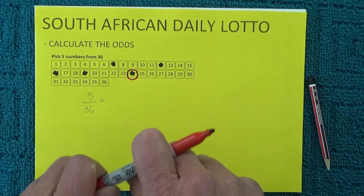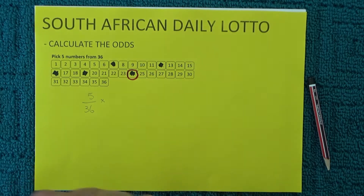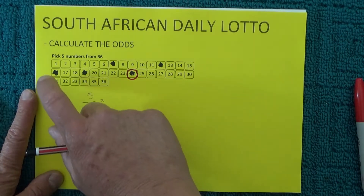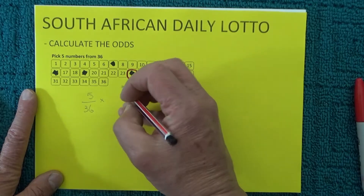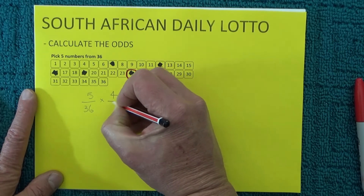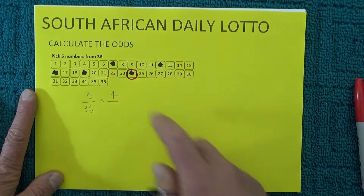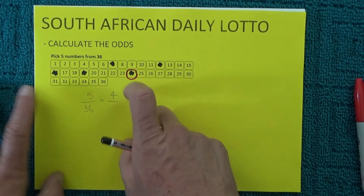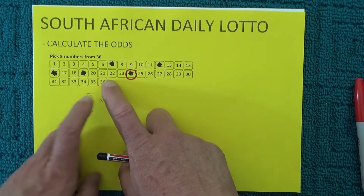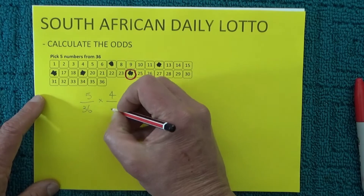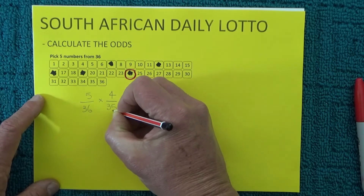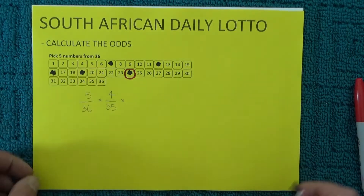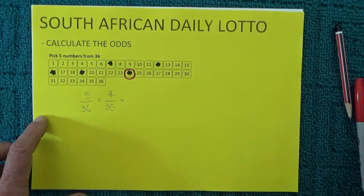When the second number is drawn, you've got four chances left to match it. One number has already come out of the barrel, so there are only 35 numbers left. So you've got four chances in 35 of matching the second number drawn.